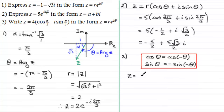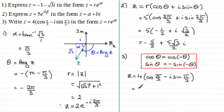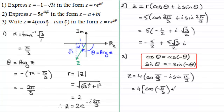So the question itself: z equals 4 times (cos(π/3) minus i sin(π/3)). We need to create a plus. Using those identities: cos(π/3) is the same as cos(−π/3), and the term minus i sin(π/3) becomes minus times minus i sin(−π/3), which gives plus i sin(−π/3). So we end up with 4 times (cos(−π/3) plus i sin(−π/3)).